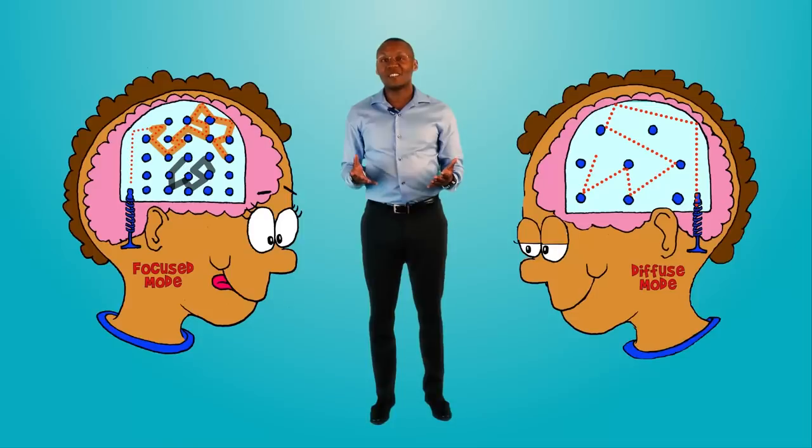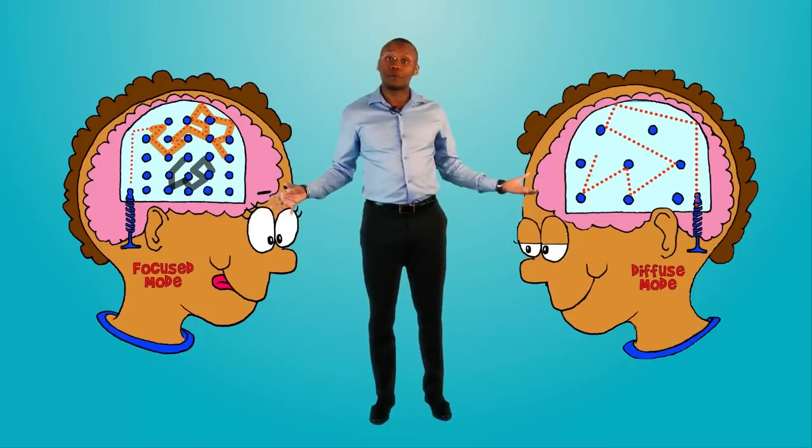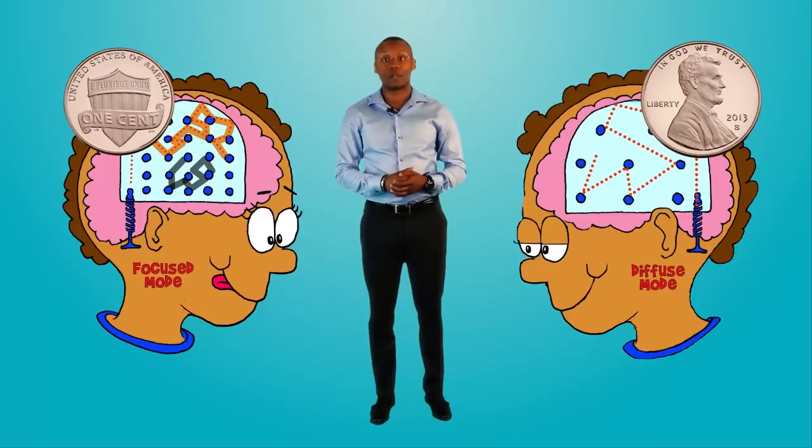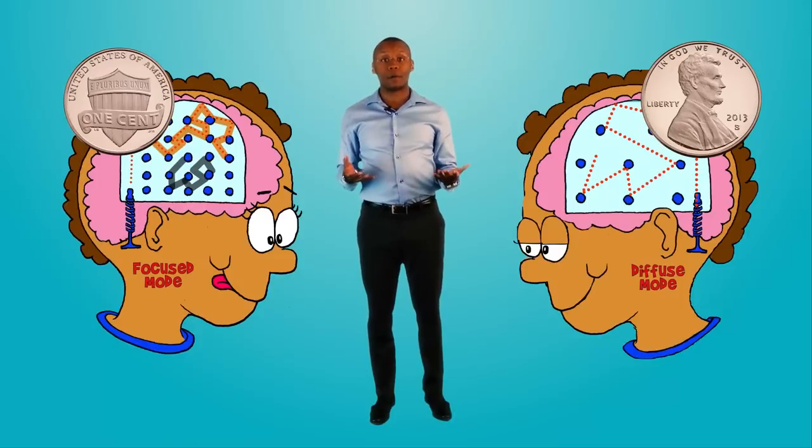When you're learning, you're either in the focus mode or the diffuse mode. You can't be in both modes at the same time. It's kind of like a coin. We can either see one side or the other side of the coin, but not both sides at the same time. Being in one mode prevents you from being in the other mode.